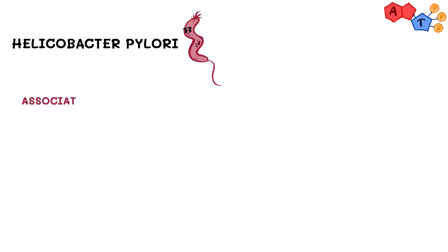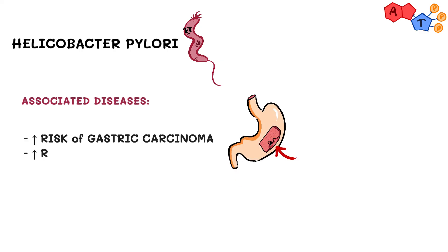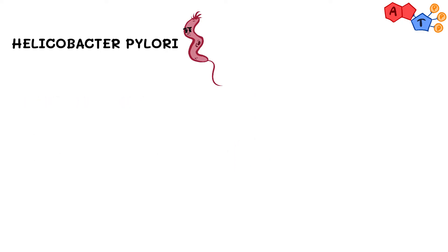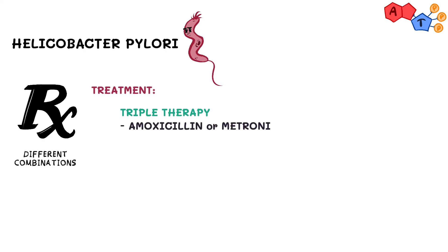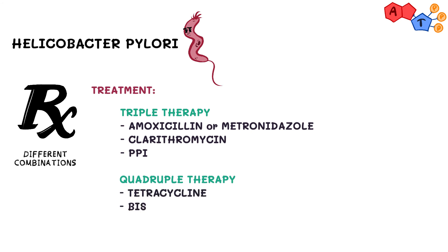Helicobacter pylori is also associated with increased risk of gastric adenocarcinoma and MALT lymphoma — MALT stands for mucosa-associated lymphoid tissue. For treatment, the most commonly used initial therapy is triple therapy (TREPL), which consists of amoxicillin (or metronidazole if the patient is allergic to penicillin), plus clarithromycin, plus a proton pump inhibitor like omeprazole. Another option is quadruple therapy, which includes tetracycline, bismuth, metronidazole, and a PPI. These are not the only combinations available.